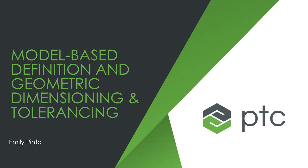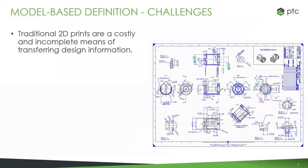So let's start with some challenges that PTC aims to address with the Creo model-based definition and GD&T solutions. The main thing here is that traditional 2D prints are costly and often incomplete for transferring design information. They've been around forever — it was the way things used to be done, and industry has been slow to switch over, just out of habit. And there are some real issues with 2D drawings — they're hard to understand if you're looking at them.